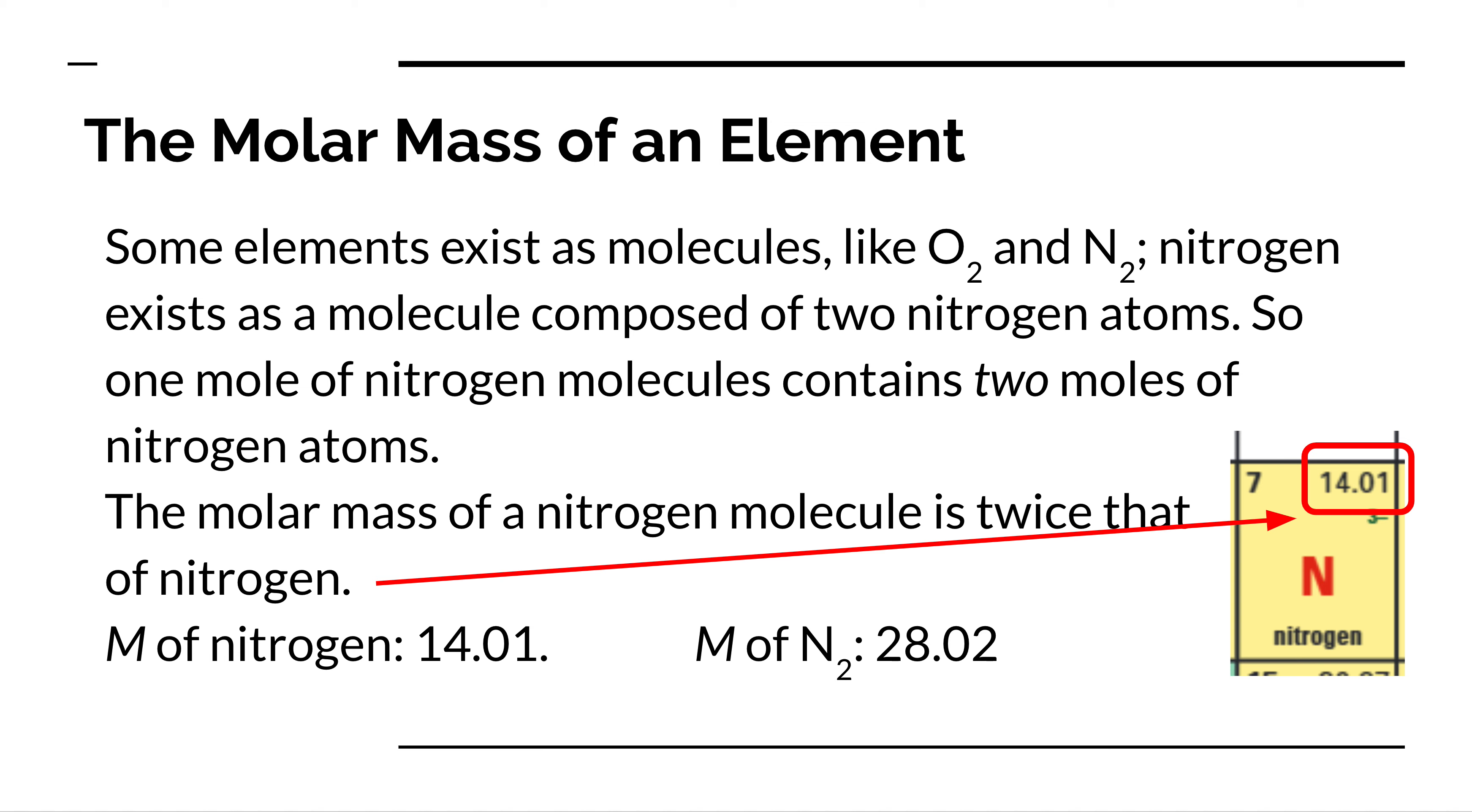So if you want to know the mass of nitrogen gas, you have to double it. The molar mass of nitrogen gas is 28 and two hundredths of a gram per mole. There's 28 and two hundredths of a gram in every single mole of nitrogen molecules, because there are two nitrogen atoms in every nitrogen molecule.